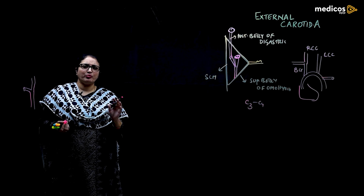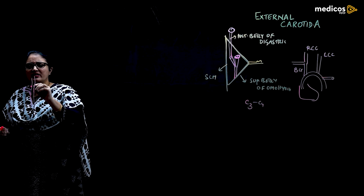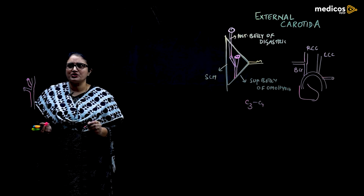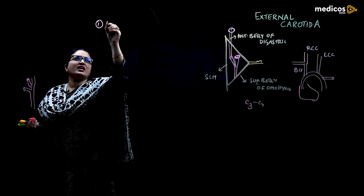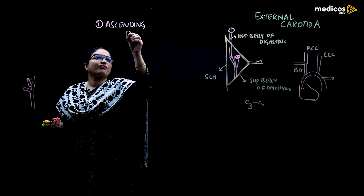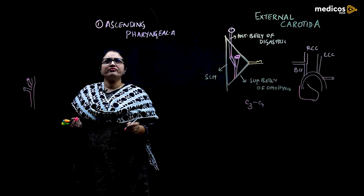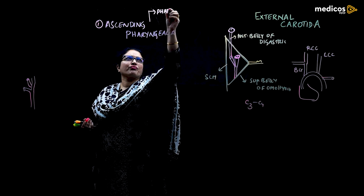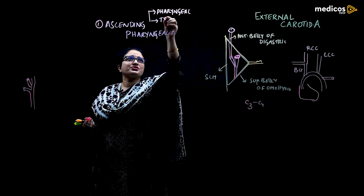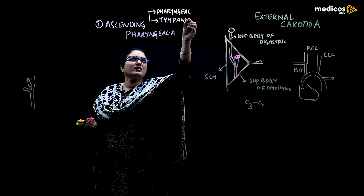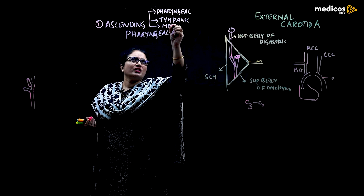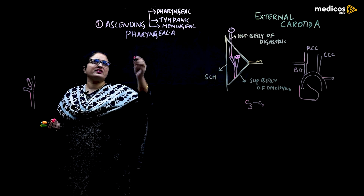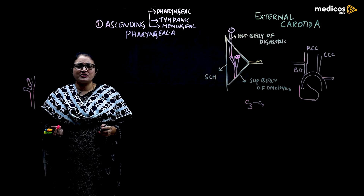The external carotid artery gives off eight important branches. The first and foremost is the ascending pharyngeal artery, which is the first and the medial-most branch. As the name indicates, this ascending pharyngeal artery provides pharyngeal branches, tympanic branches to the tympanic membrane and middle ear cavity, and meningeal branches. The meningeal branches enter through the foramen of the base of the skull and supply the meninges within the cranial cavity.